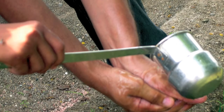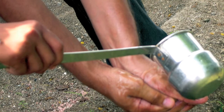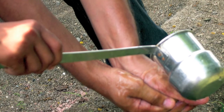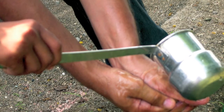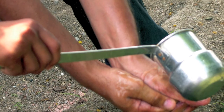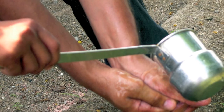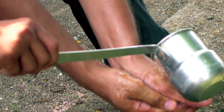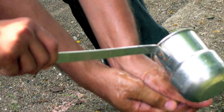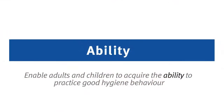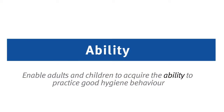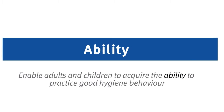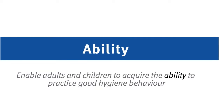The next part is about the Ability to change behaviour. We have to ask: are people capable of carrying out the new behaviours? Do they have the practical knowledge and skills to practice the new behaviour? And can they afford the new practices in terms of money, effort and time? Enable adults and children to acquire the ability to practice good hygiene behaviour.